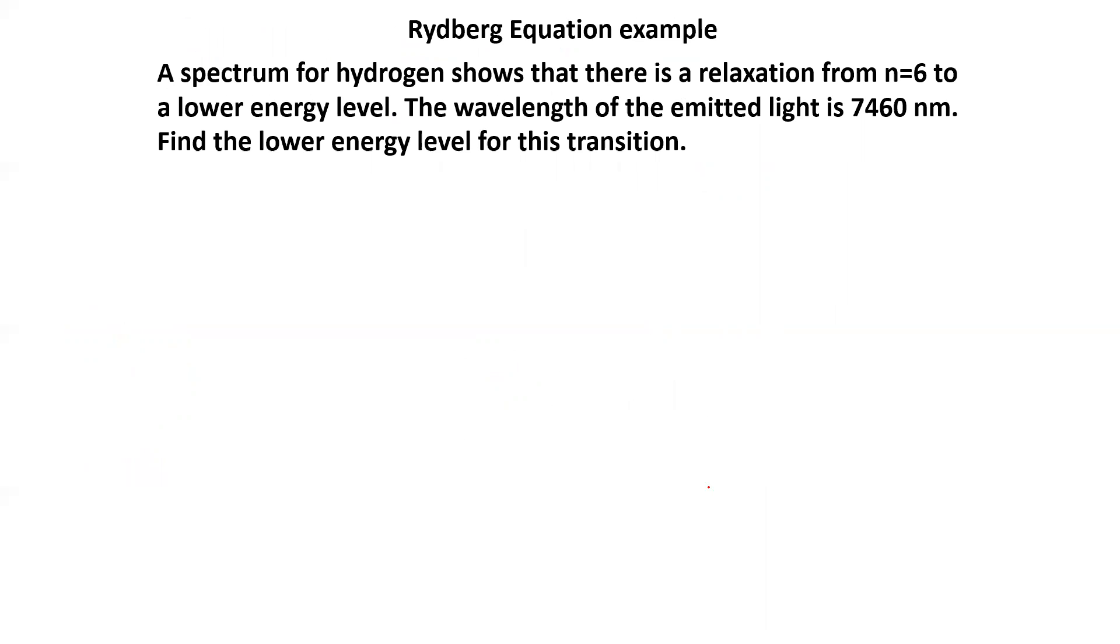So here's an example problem. A spectrum for hydrogen shows that there is a relaxation from principal energy level n equals 6 to a lower energy level. So this is a relaxation, or you can think of an emission. My initial state is in an excited state, energy level 6, and the electron will be dropping down to a lower energy level. So we want to know what that lower energy level is, what that final energy level is.